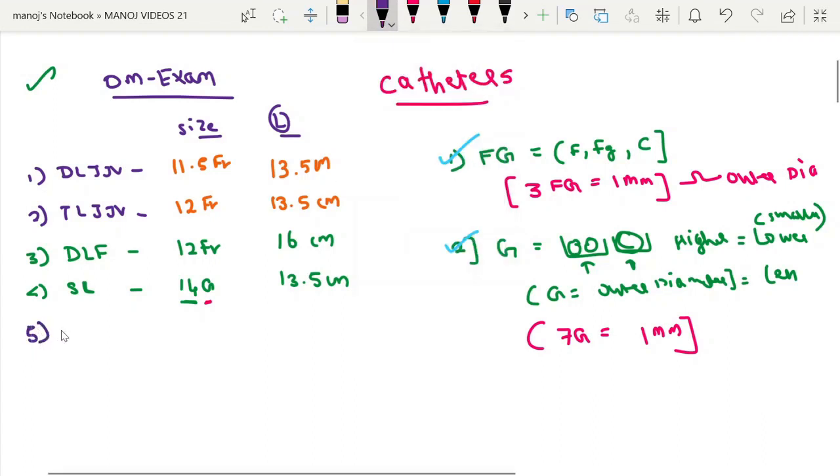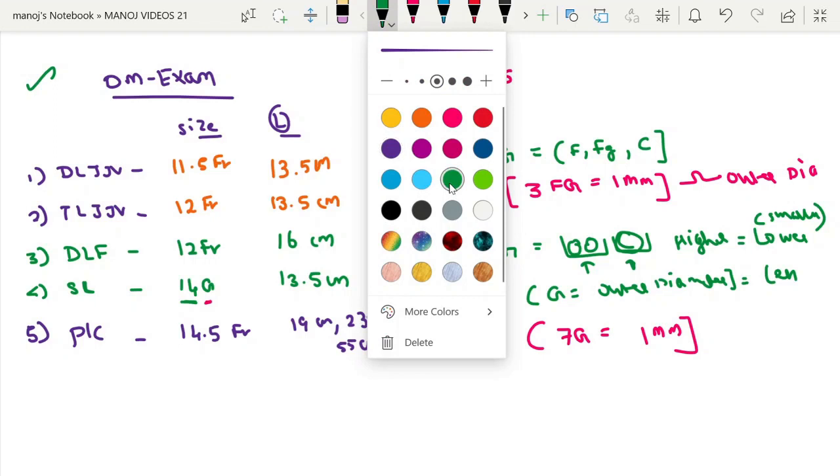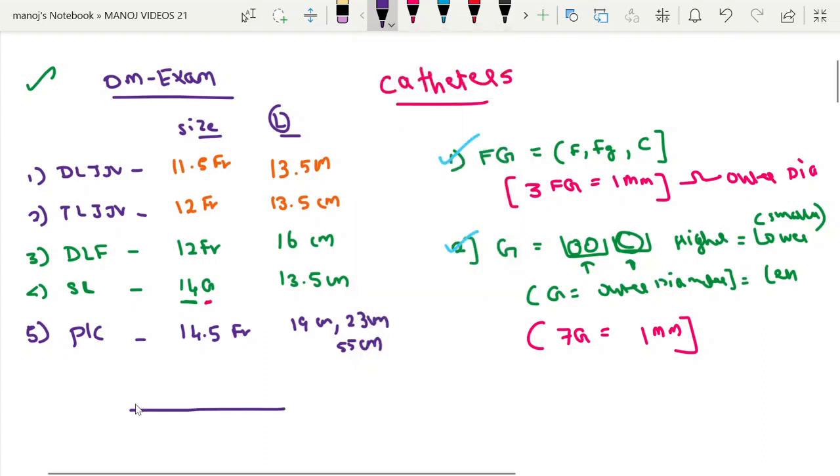The next is the subcutaneous tunnel catheter which is called as permacath. Size is 14.5 French and the length varies. There are 3 lengths: 19 cm, 23 cm, and 55 cm which is being used for the femoral catheterization. With respect to this perm cath, the perm cath will be like this. There will be a subcutaneous cuff over here, another catheter, the port and the hub.